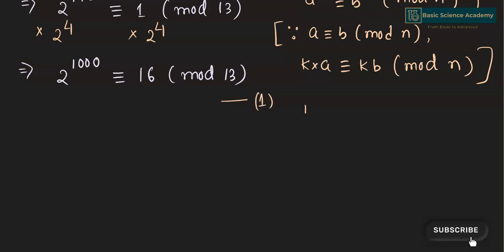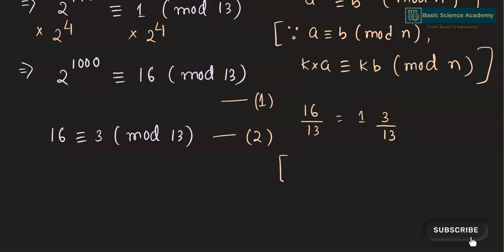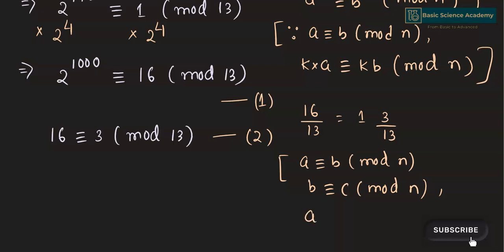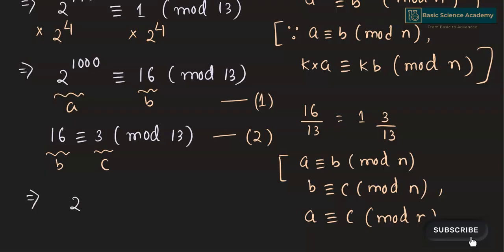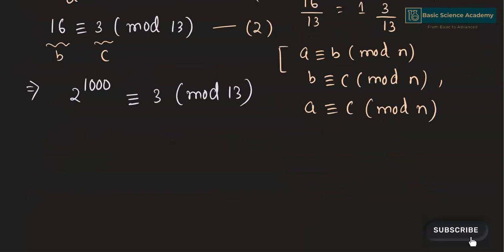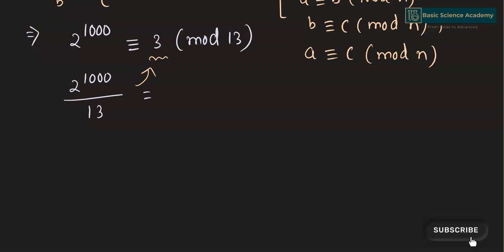When you divide 16 by 13 it equals 1 with a remainder of 3, so 16 is congruent to 3 mod 13. According to the rule of modular arithmetic, if a is congruent to b mod n and b is congruent to c mod n, then a is congruent to c mod n. Applying this to our two equations, 2 to the power of 1000 is congruent to 3 mod 13. Hence when you divide 2 to the power of 1000 by 13, the remainder is 3.